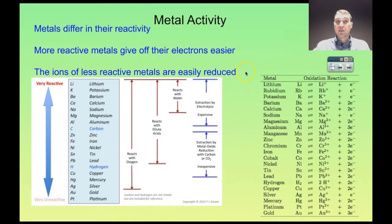The ions of a metal that are easily reduced — that happens when a metal is not very reactive. So the less reactive a metal, its ions are very easily reduced by gaining electrons.